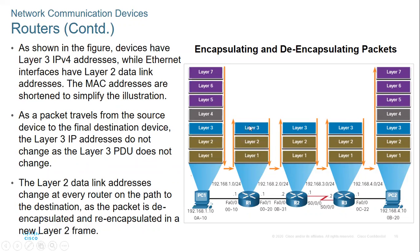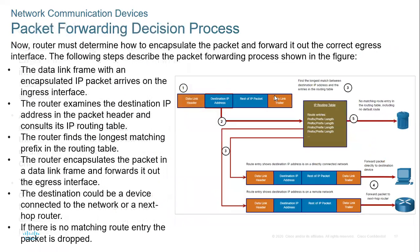At layer two we verify the MAC address belongs to this router. Then we move up to layer three and look for the IP address. If the IP address is not addressed to this router, we start going back down. That is the decapsulation and re-encapsulation process.